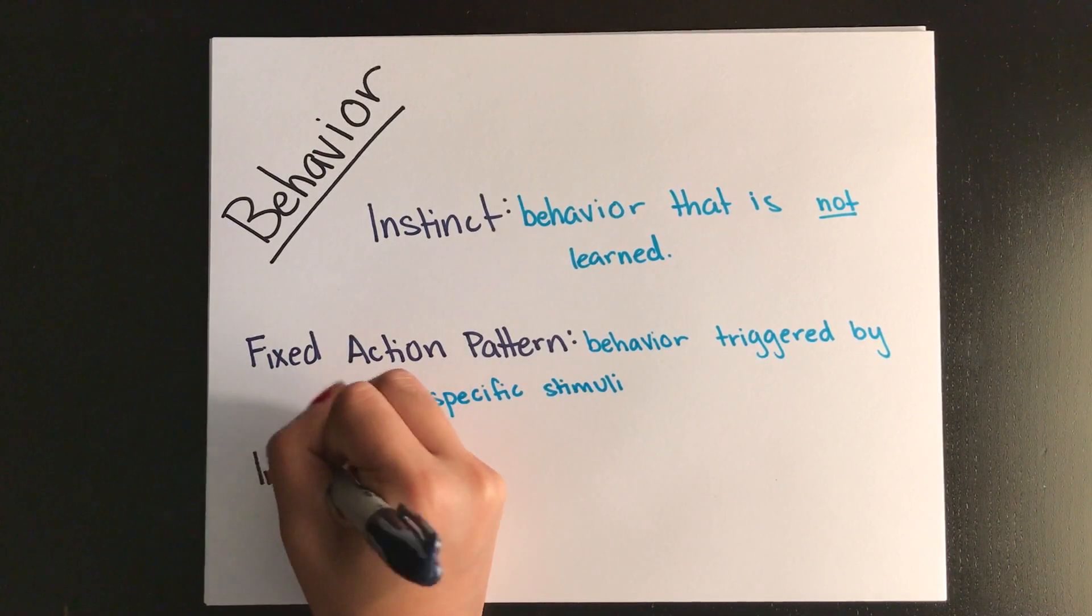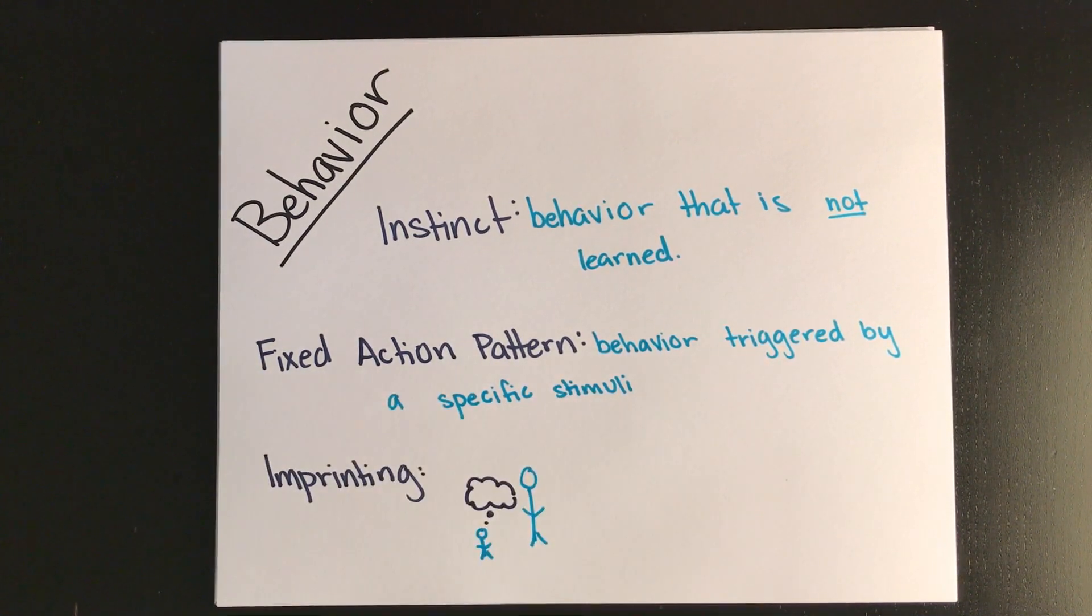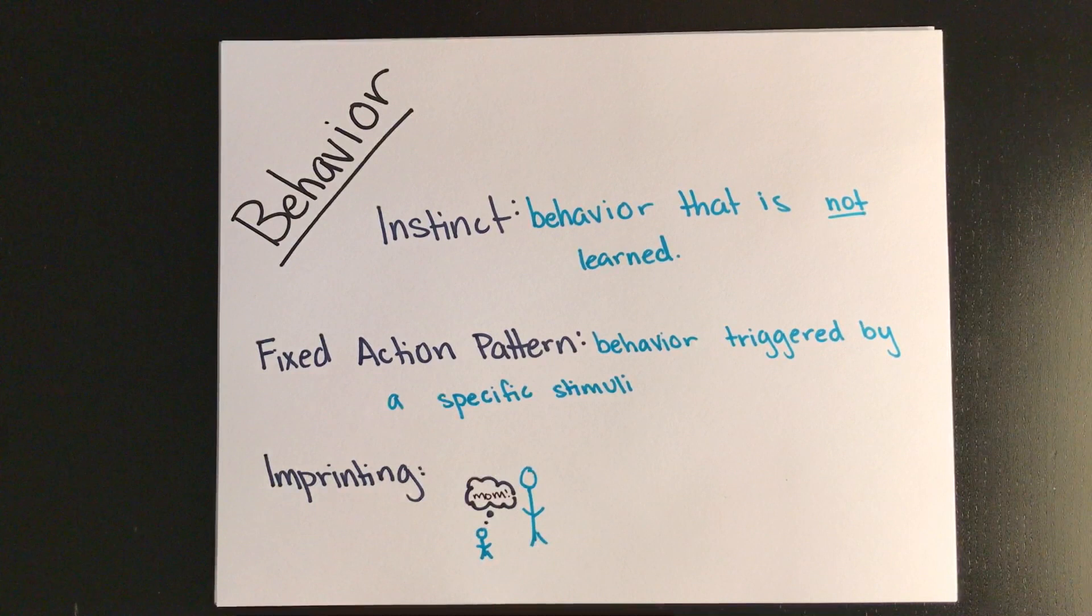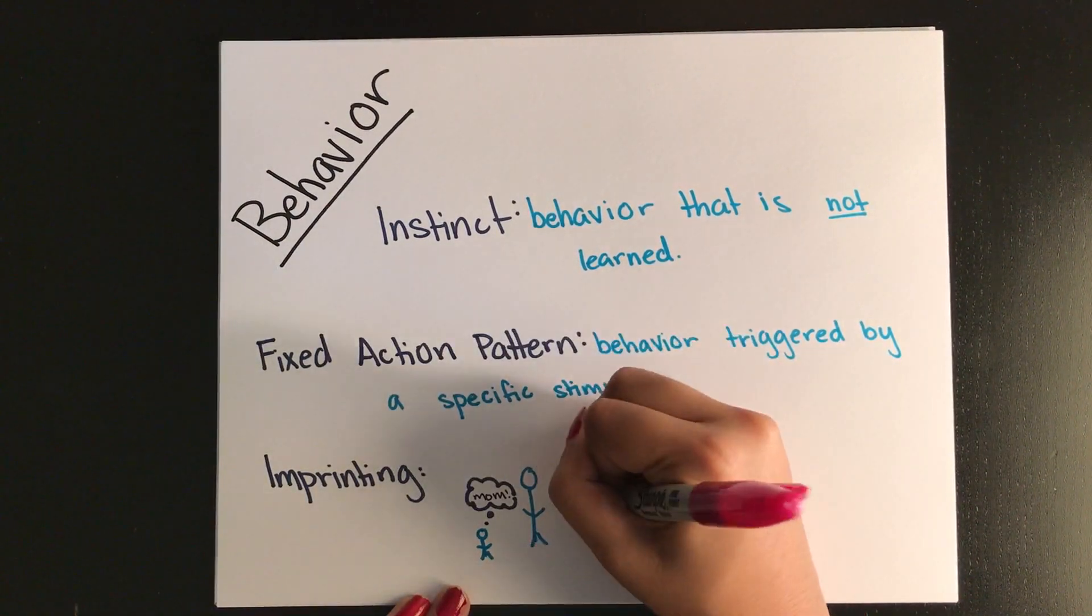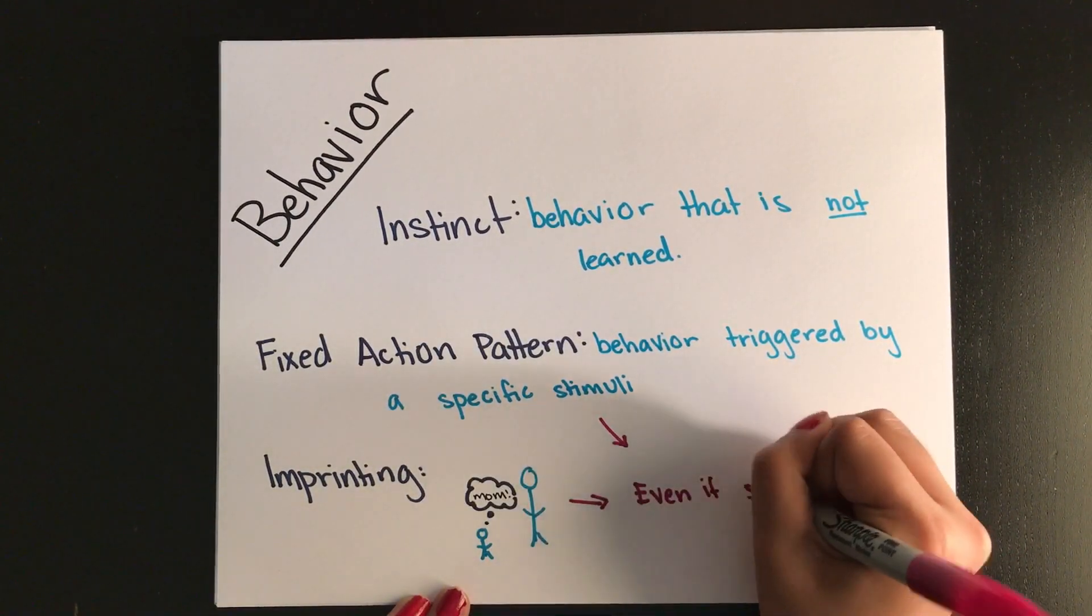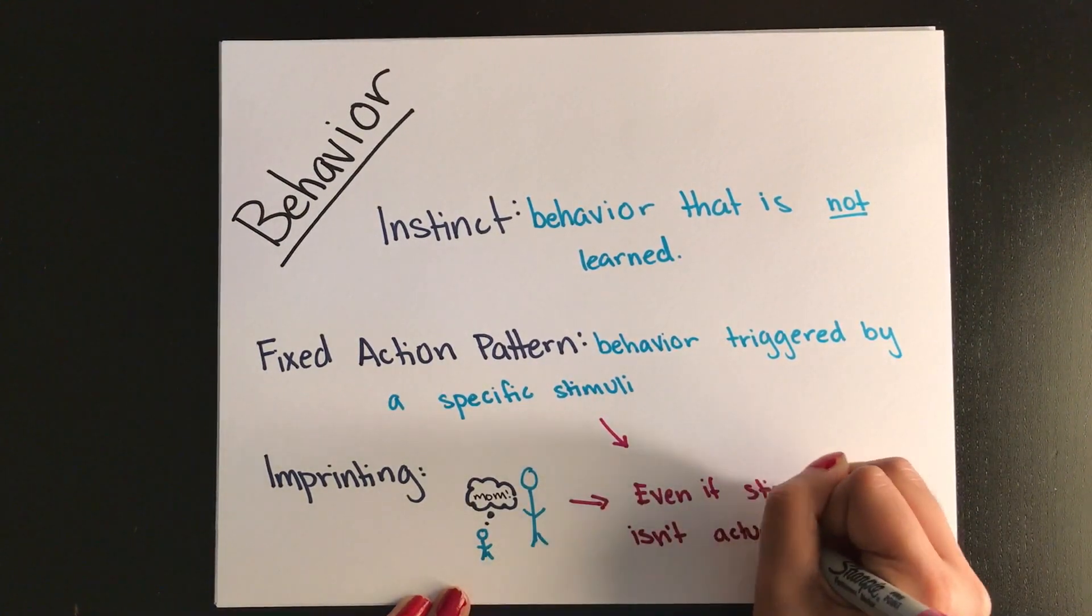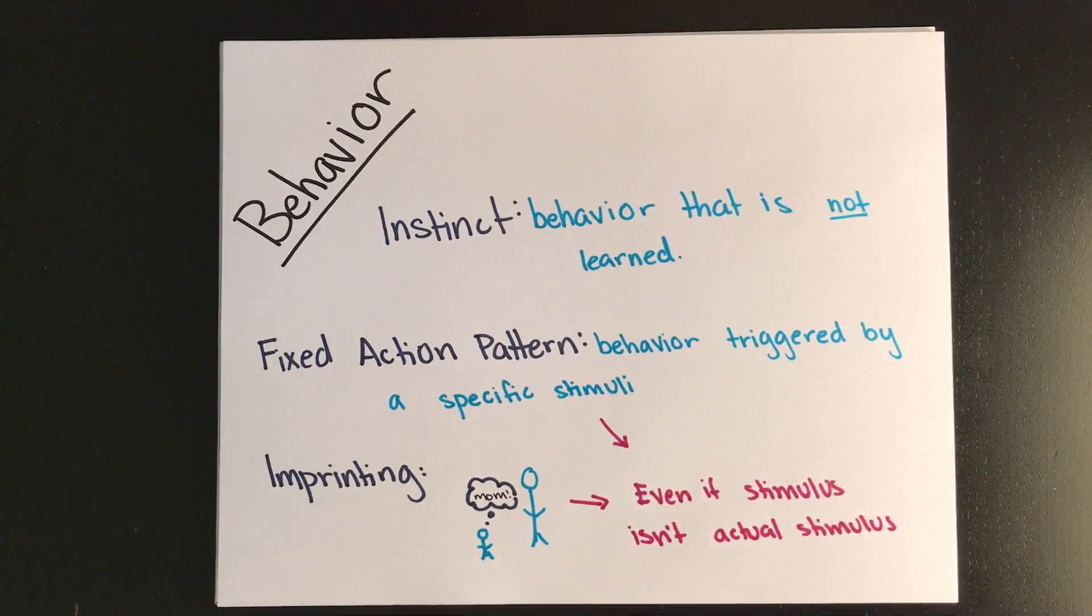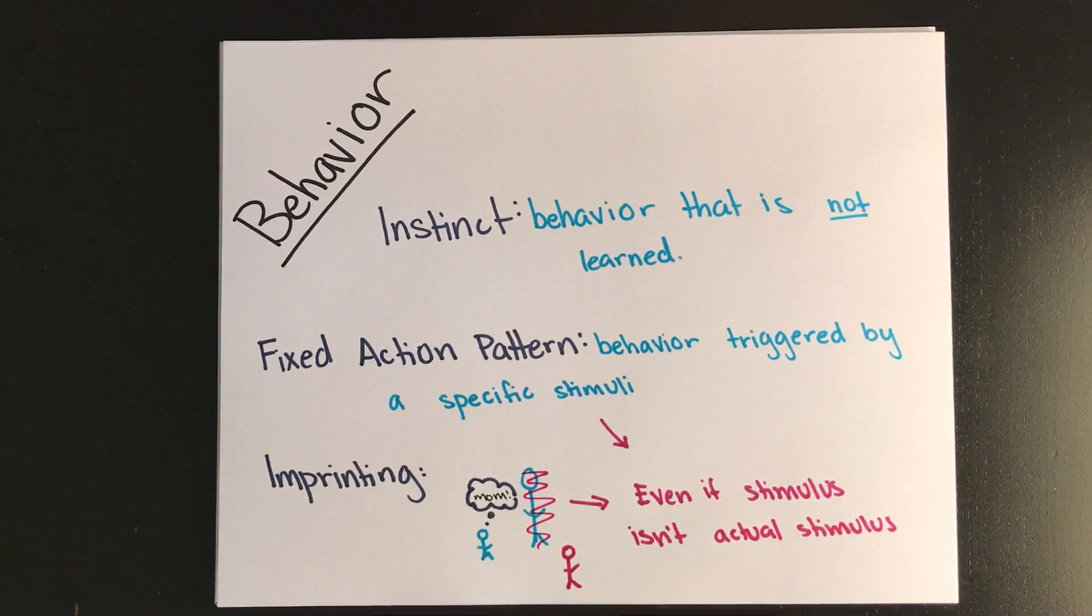Imprinting is what happens when one organism recognizes another object as its mom after it sees its mother or potentially something else during this critical time shortly after birth. Both fixed action patterns and imprinting will occur even if the stimulus isn't the real stimulus. So even if the animal sees an object and it isn't its mom during this critical period, now it recognizes that object as its mother.